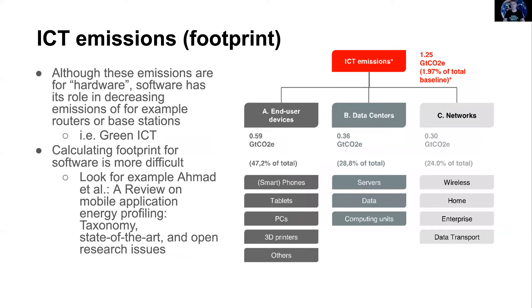In the SMARTER 2030 article it shows quite nicely how ICT emissions work — we are mainly talking about the carbon emissions of ICT and comparing things on that basis. If we want to look at the social or economic aspects or effects, then we need to make other kinds of calculations that they have been providing here.